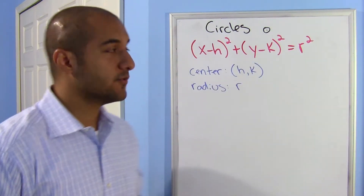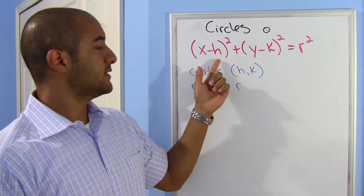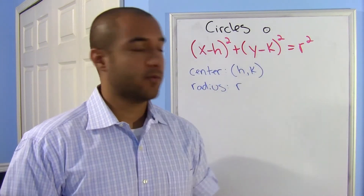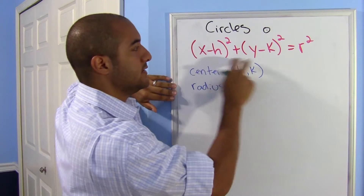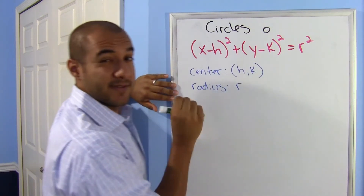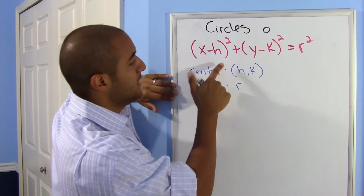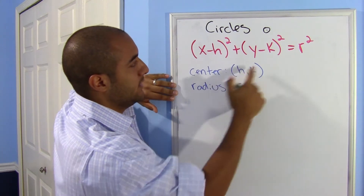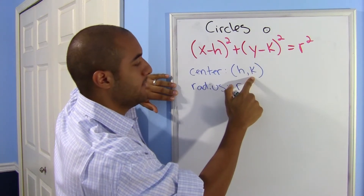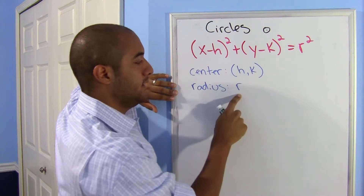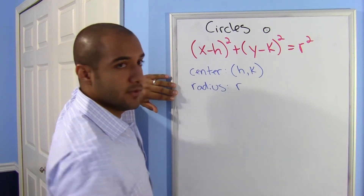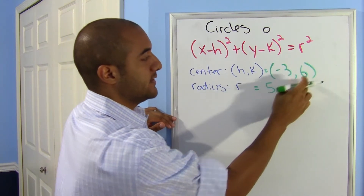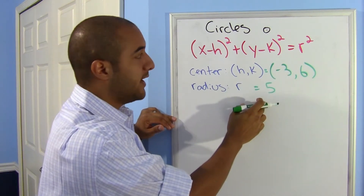Alright, this is the equation for a circle: x minus h squared plus y minus k squared equals r squared. Now these numbers are special — they'll let you know where the center of your circle is. h is your x-coordinate, k is your y-coordinate, and r is your radius. So if your center was negative 3, 6 and your radius was 5,